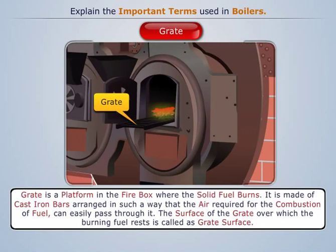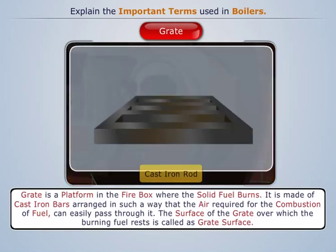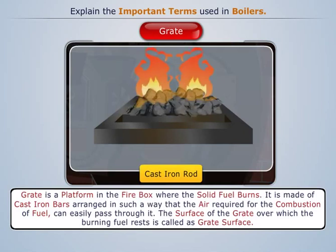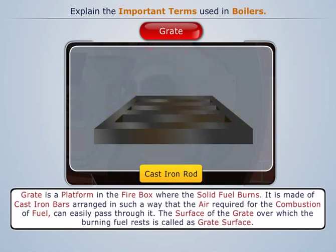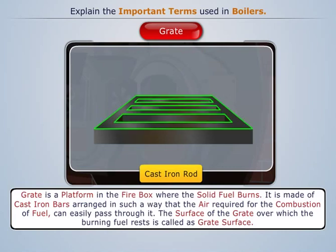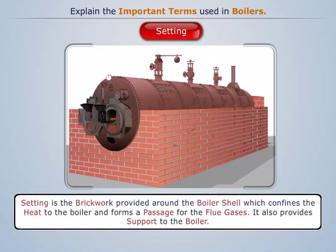The grate is made of cast iron bars arranged in such a way that the air required for the combustion of fuel can easily pass through it. The surface of the grate over which the burning fuel rests is called the grate surface.